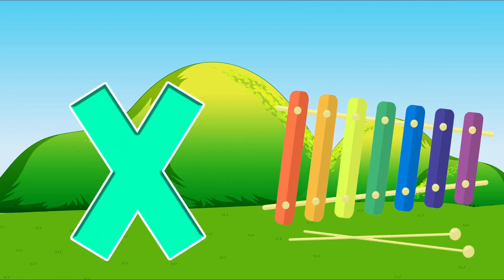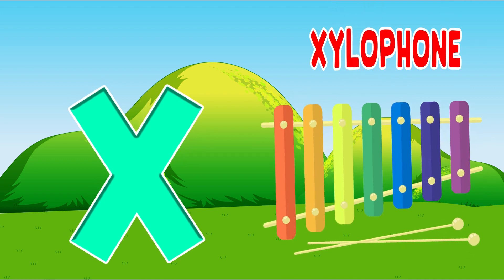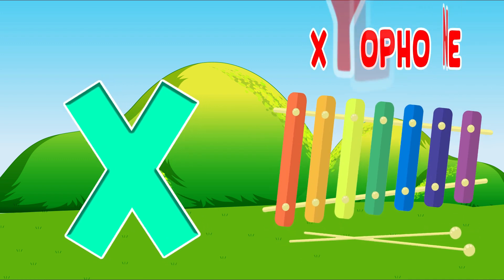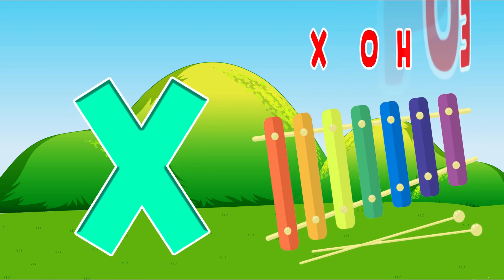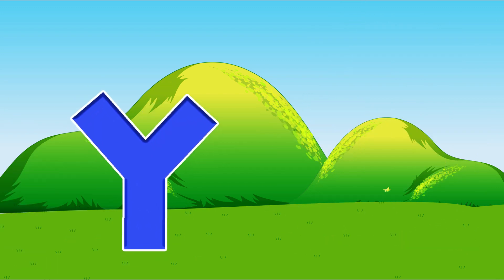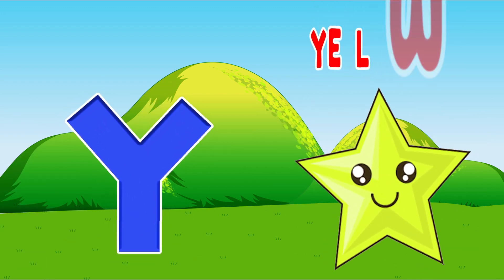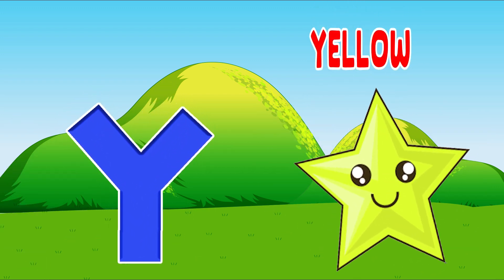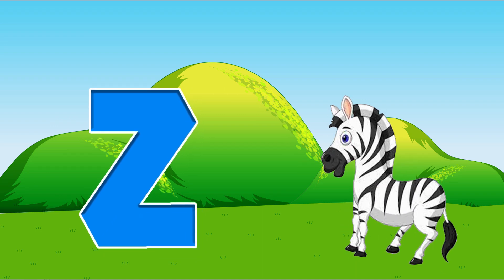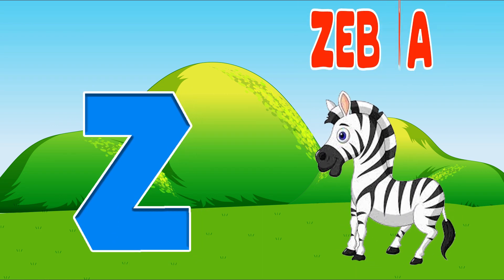X is for xylophone, X-x-xylophone. Y is for yellow, Y-ye-yellow. Z is for zebra, Z-z-zebra.